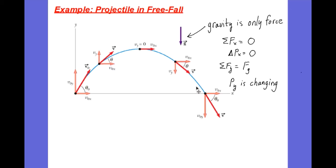If the velocity isn't changing, and momentum is mass times velocity, and the mass isn't changing either, then mass times velocity — the change in momentum — is zero. In the Y, however, there is an external force, the force of gravity pulling down on the object. So the momentum in the Y direction is changing, just like the velocity in the Y direction is changing.